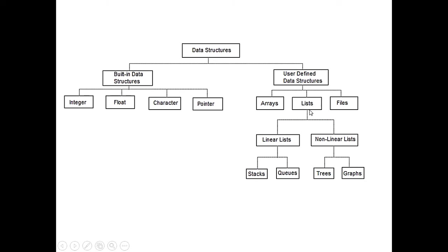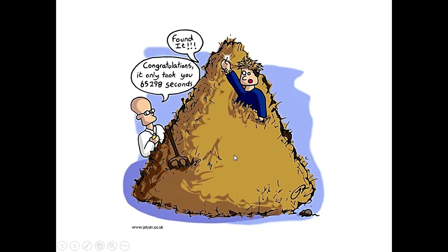In C you have integer, float, character, and pointer as typical data structures. But Python gives you advantages like a list. A list can have an integer, then a floating point number, then a string — a mixed type. In C, an array must be all of the same type, but a list can have different types. Linear structures like stacks, queues, trees, and graphs are all typical data structures.